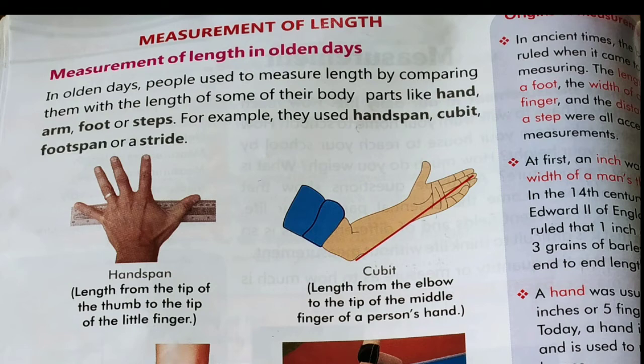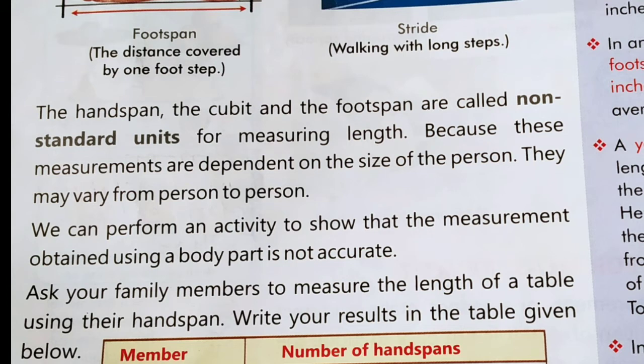For example, they used hand span, cubit, foot span, or a stride. Hand span यानि अपने हतेली से नापना. Cubit मतलब अपने finger से लेके elbow तक की माप. Foot span मतलब अपने पैर की लंबाई के बराबर. और stride मतलब अपने walking distance के बराबर distance. The hand span, the cubit, and the foot span are called non-standard units for measuring length. Hand span, cubit, or foot span को non-standard units of measuring length कहा जाता है — यानि इन्हें हम standard units नहीं बनाते हैं.